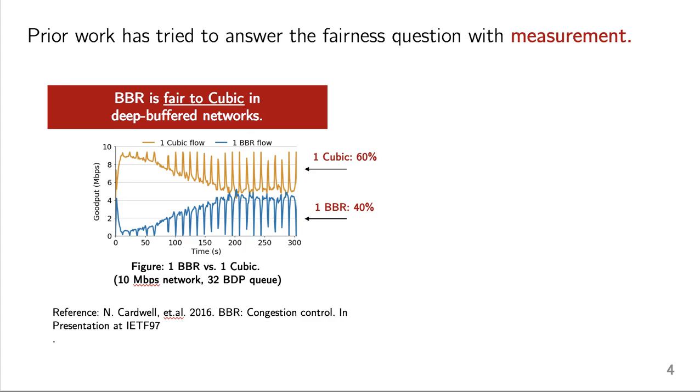We can see that one cubic flow here, after convergence, is getting about 60% of the available bandwidth, while the one BBR flow is getting about 40%. So here, BBR is more than fair to cubic.